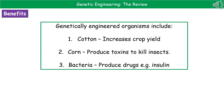Some key benefits of carrying out this process of genetic engineering: we can increase the crop yield, which is what we see with things like cotton. We can actually use toxins to kill insects that are produced by the plant itself, which is an example of what we can see in certain corn varieties. And we can also produce key drugs, such as insulin for human consumption, by using things like bacteria.